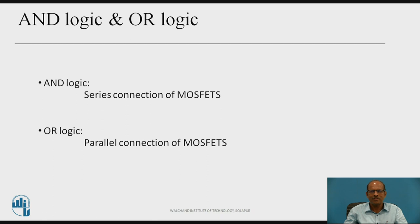First, we understand what is AND logic and OR logic. In CMOS design, we make use of PMOS and NMOS. MOSFETs are used as switches in CMOS logic design. When MOSFETs are connected in series, it is equivalent to AND logic. Similarly, when MOSFETs are connected in parallel, it is equivalent to OR logic.